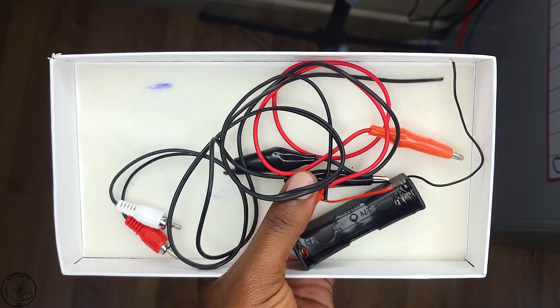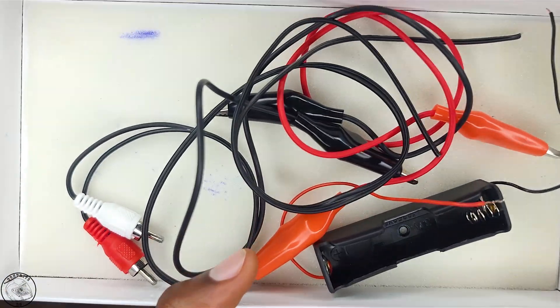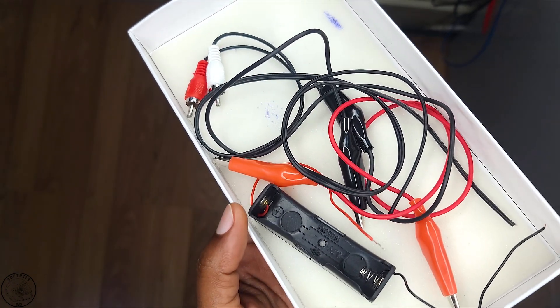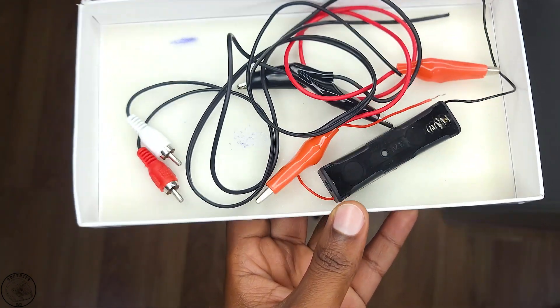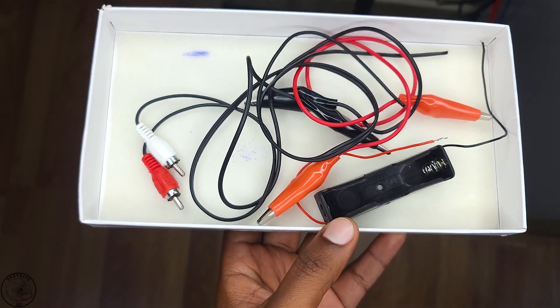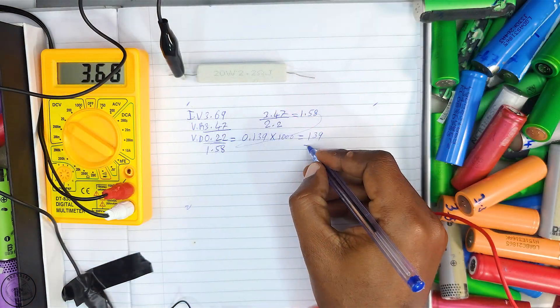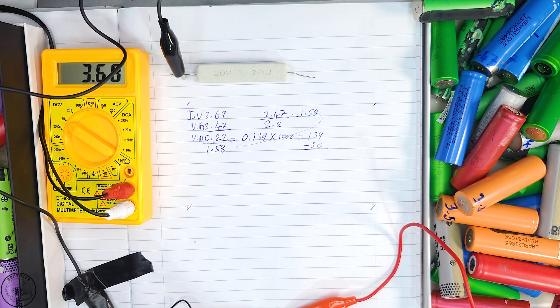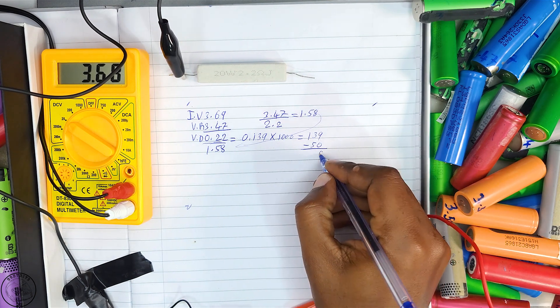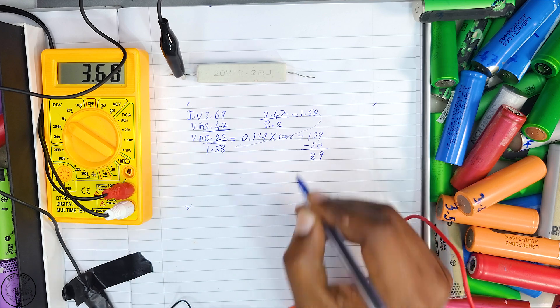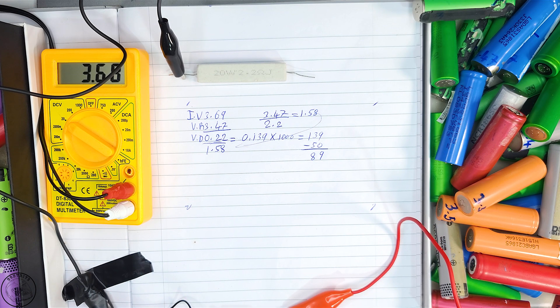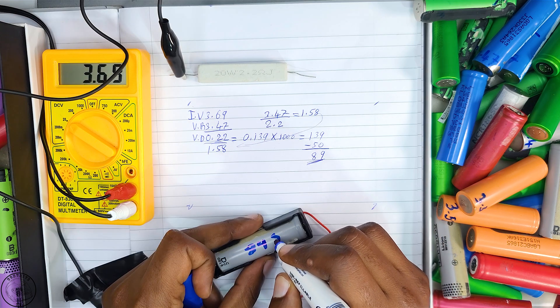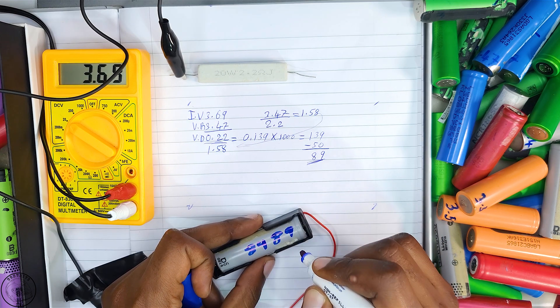The wires I used were relatively bulky, introducing additional resistance. I assigned 50 milliohms to the wiring and subtracted this from the total. Thus, the final calculated internal resistance for the Panasonic cell was approximately 89 milliohms, which I recorded on the cell.